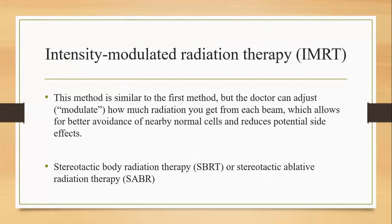Intensity modulated radiation therapy, IMRT. This method is similar to 3D conformal radiation therapy, but the doctor can adjust how much radiation you get from each beam, which allows for avoidance of nearby normal cells and reduces potential side effects. The next method is SBRT or SABR.